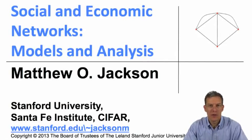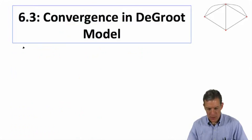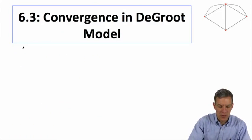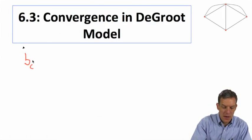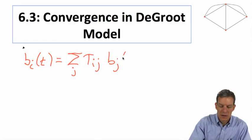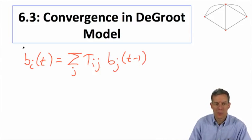We're talking about learning, and we're going to talk more about the DeGroot model and try to understand some of its convergence properties. To reiterate the structure of the model: b_i(t) equals the sum over j of T_ij times b_j(t-1). So how much person i puts on different people's beliefs in the previous period — it's a very simple model.